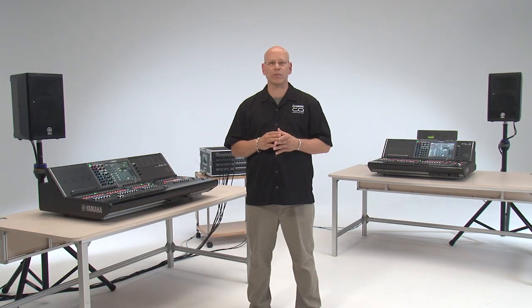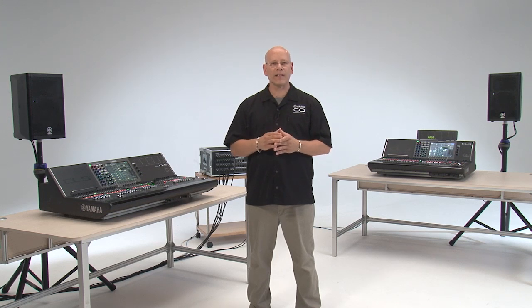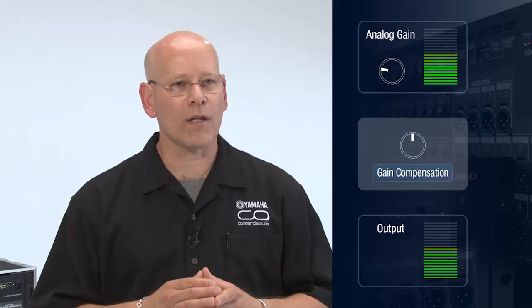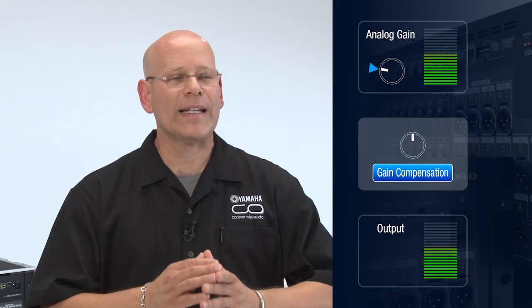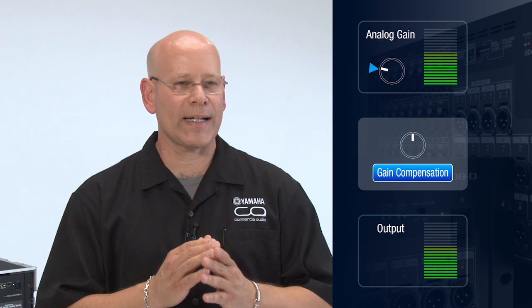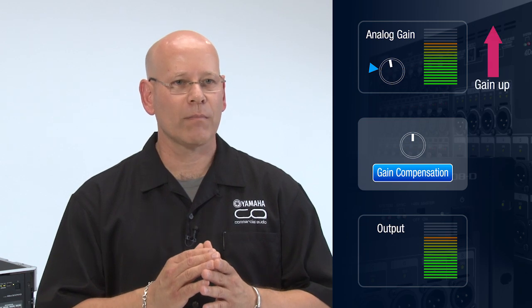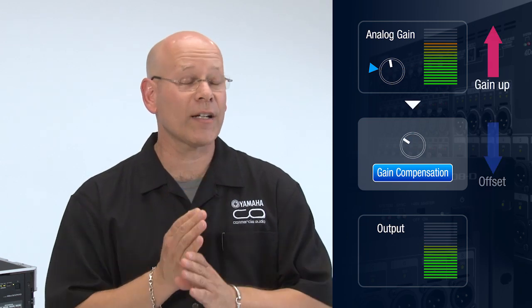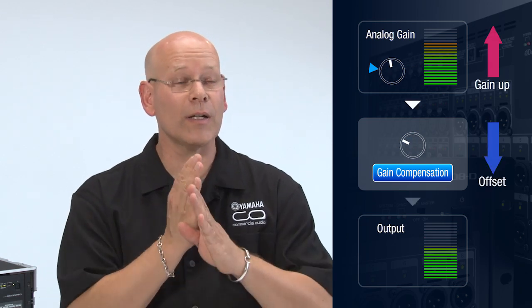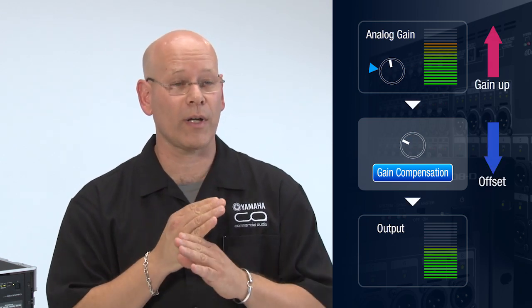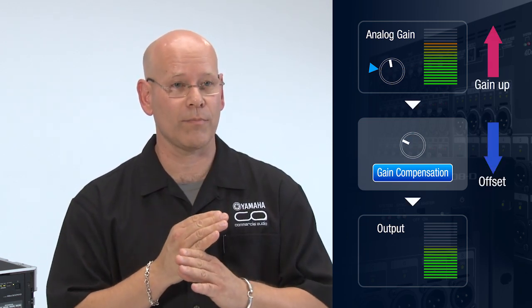If a head amp is adjusted with gain compensation on, the inverse action is done. In other words, if I turn up a head amp 3 dB with gain compensation on, it will automatically turn it down 3 dB.